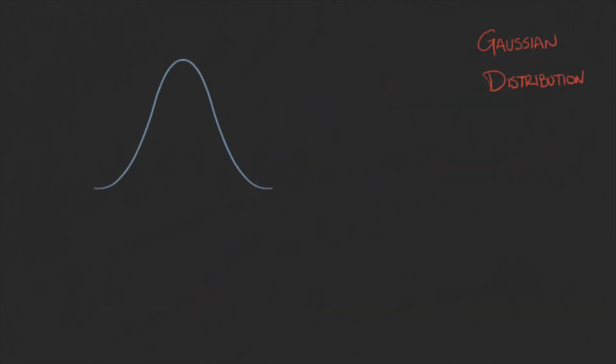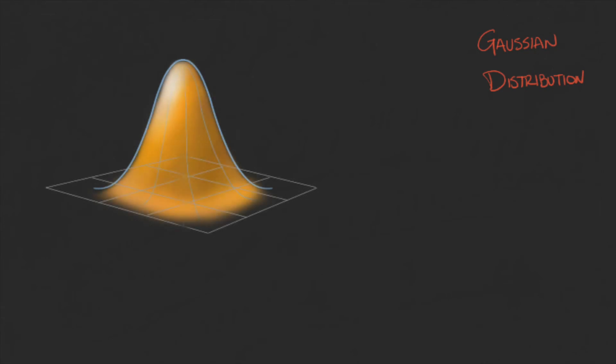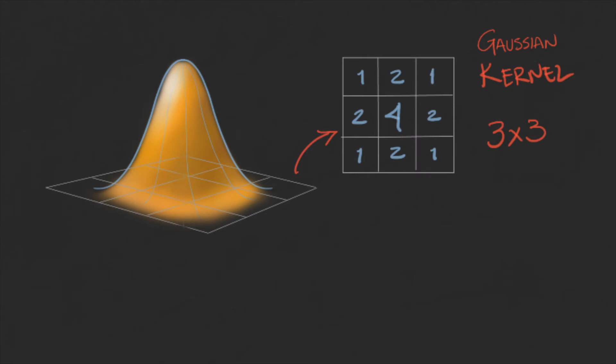This kernel forms a weighted average that weights pixels at its center much more strongly than the pixel at the boundaries.